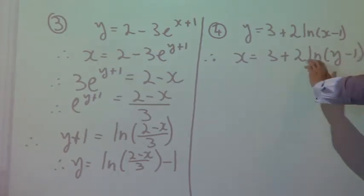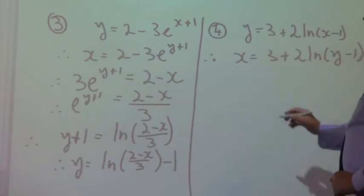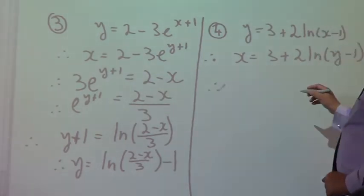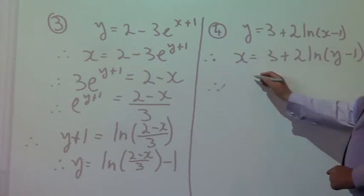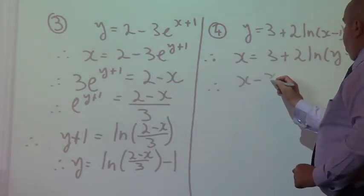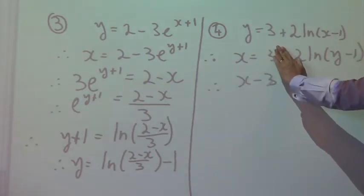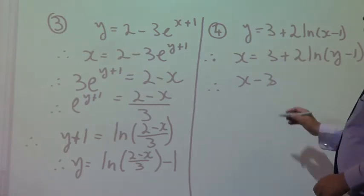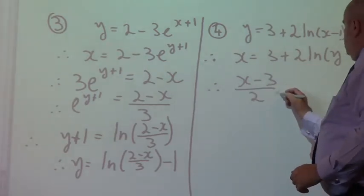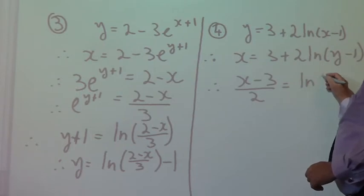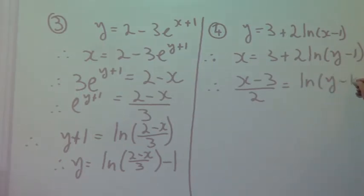Okay, let's clear some stuff away from this side. Firstly, we will subtract 3 from both sides. x minus 3. So that's going to go out. And I'm going to divide by 2 while I'm at it. Equals ln y minus 1.